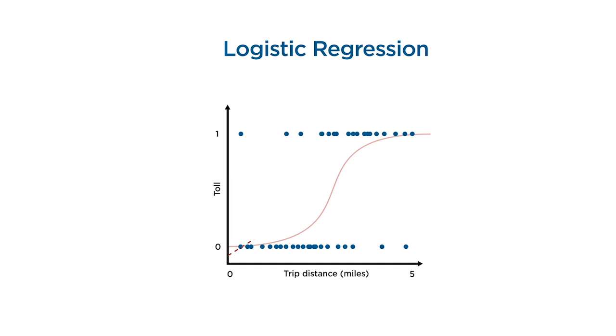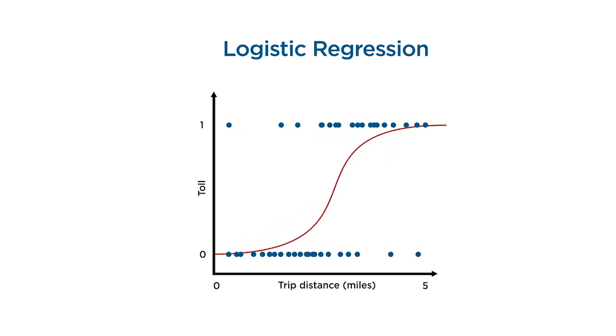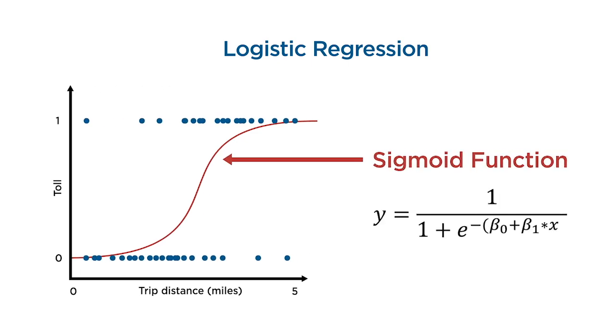To do this, instead of fitting a line to the data, logistic regression fits an S-shaped logistic function, also called the sigmoid function. This curve goes from 0 to 1, and it estimates the probability that the trip will have a toll based on your predictor feature.